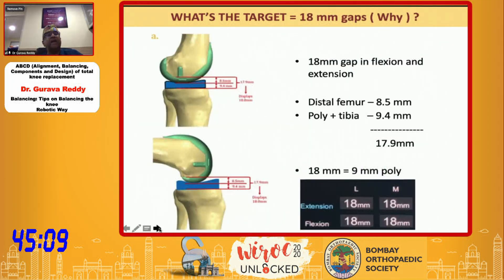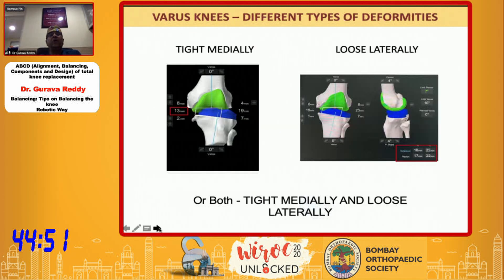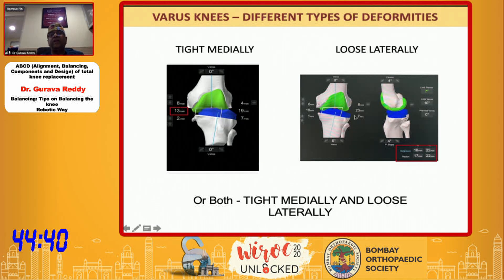What is the target of the gaps? 18 millimeters. Why? Because the distal femoral implant is 8.5 millimeters, and poly and tibia is 9.4 millimeters, which totals 18 millimeters. So if your target gap is 18 millimeters, a 9-millimeter poly will fit there. In varus knees, there are different types of deformities: some are tight medially — 13 mm on the medial side — some are loose laterally — 23 mm on the lateral side — or some can be both.